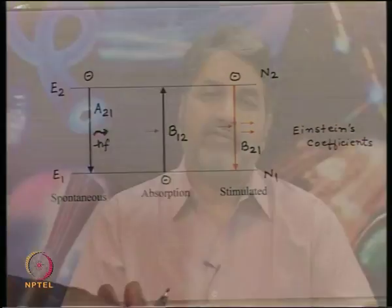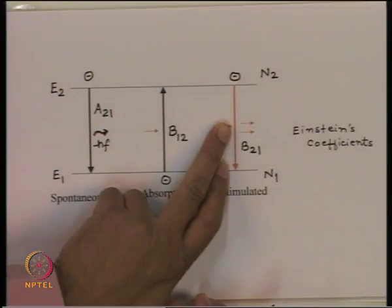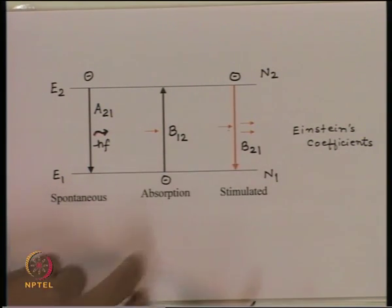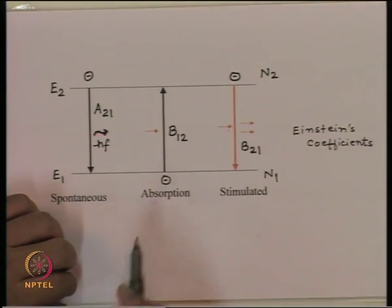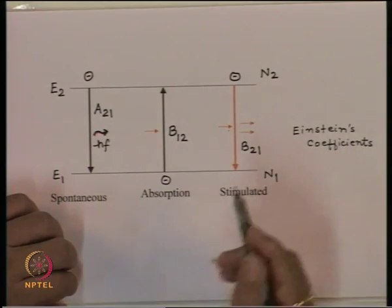But when we discuss the laser as an optical source for optical communication, we may use the laser for amplification, but at this point of time we are looking for an optical source. What it means is that the photon which is going to trigger this process is not going to come from outside. If the photon does not come from outside then of course this process cannot take place.